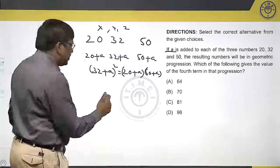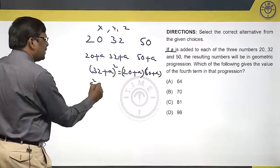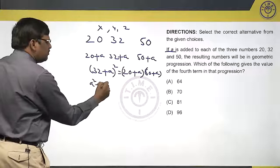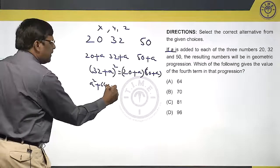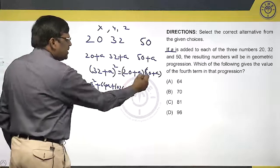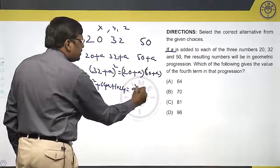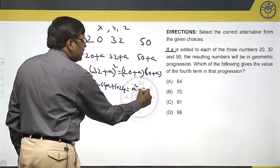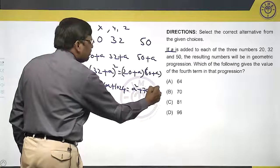Now, if you simplify this, this is A square plus 2AB that is 64A plus 1024. If you multiply this, A square, 20A plus 50A, 70A plus 1000.